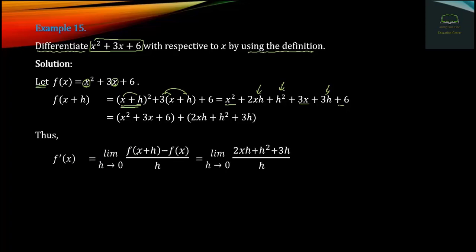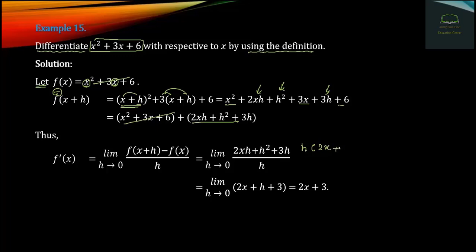As h approaches the limit as h goes to zero, we get the solution. The result is 2x plus 3. The solution of the function f of x is the derivative, and the difference simplifies to 2x plus 3.